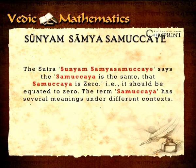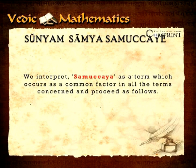The sutra Shunyam Samya Samuchchaye says the samuchchaye is the same, that samuchchaye is zero, that is it should be equated to zero. The term samuchchaye has several meanings under different contexts. We interpret samuchchaye as a term which occurs as a common factor in all the terms concerned and proceed as follows.